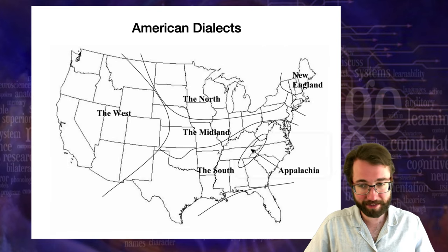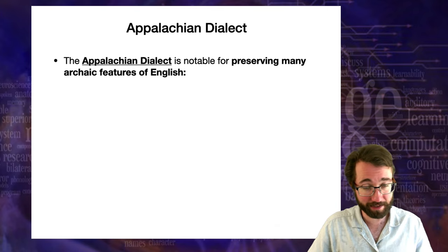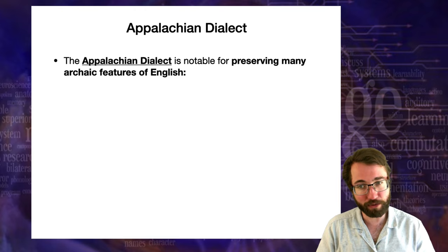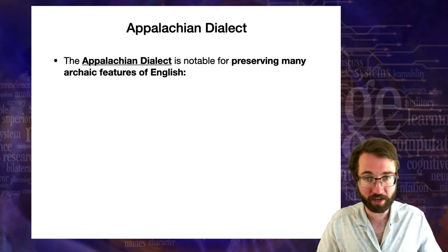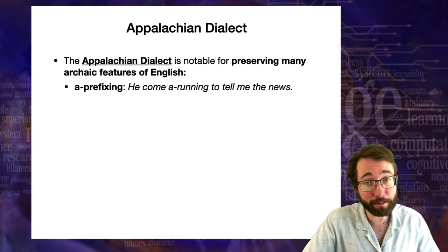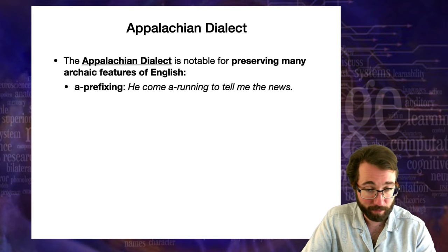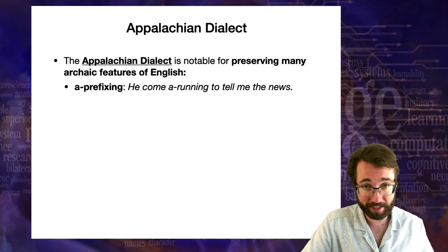Next, I'll talk about Appalachia, which is sort of embedded within the South but is a distinct dialect region. The Appalachian dialect is spoken in the remote areas of the Appalachian Mountains and is noticeable for preserving many archaic features of English — features that used to be part of standard English a long time ago but are now preserved only in this dialect. In particular, there is a morphological form called a-prefixing: you can say something like 'he come a-running to tell me the news.' That prefix a- used to be part of the standard English language, but no longer is, though it's preserved in Appalachian English.